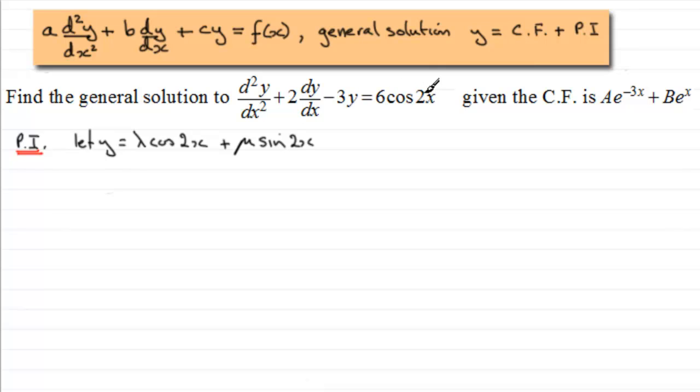So I could have had say 6sin3x here rather than cos2x. My particular integral would have been of the form y equals lambda cos3x plus mu sin3x. So it doesn't matter whether you've got cosine here or sine. Go for this style.